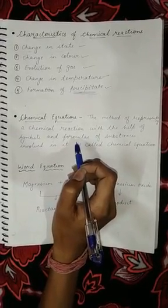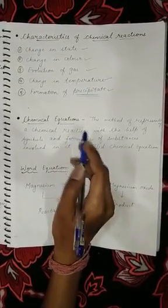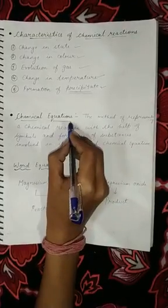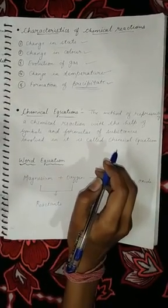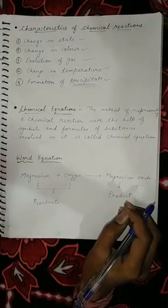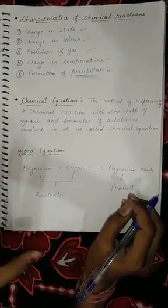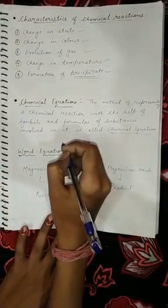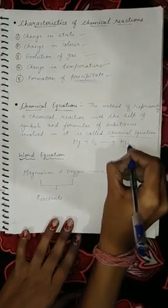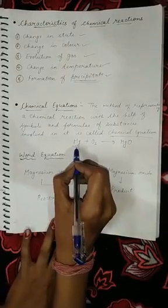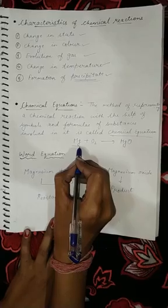Now, the next topic is chemical equations. We have seen chemical reactions, but we can also write them in the form of chemical equations. A chemical equation is the method of representing a chemical reaction using the symbols and formulae of the substances involved. For example, magnesium burned in the presence of oxygen gives magnesium oxide. We can write this in the form of a word equation or sentence.